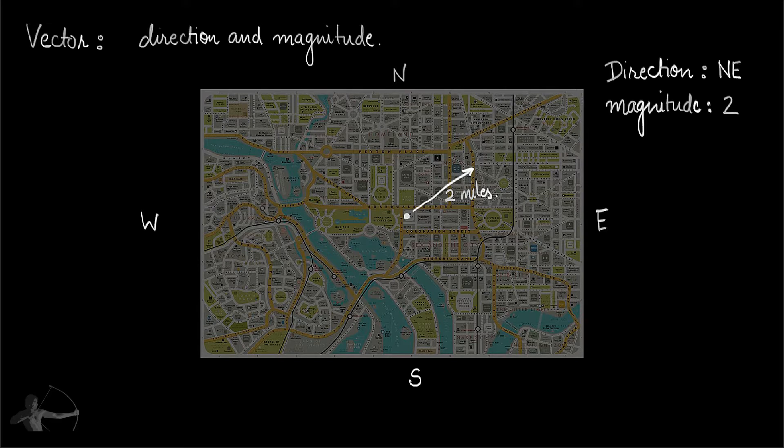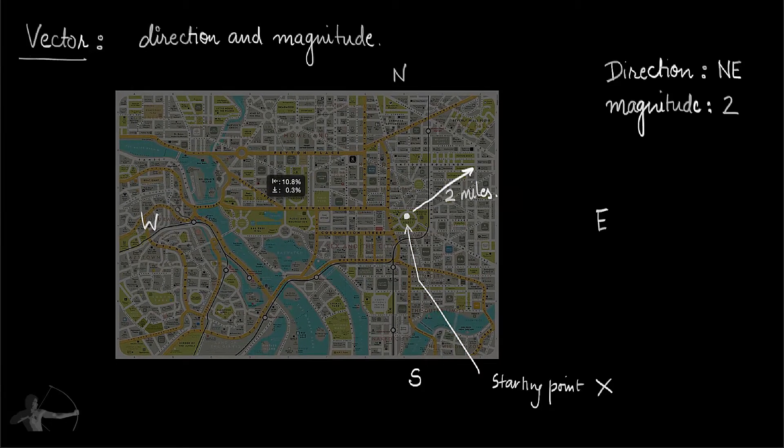You have a direction and magnitude irrespective of the starting point. For a vector, it doesn't matter where you start. It's just a direction and the magnitude. So you can start in this map from anywhere. You just have to travel towards northeast for two miles.